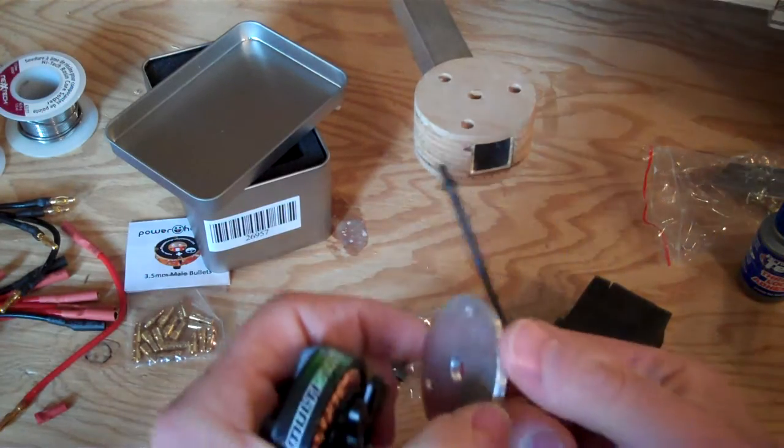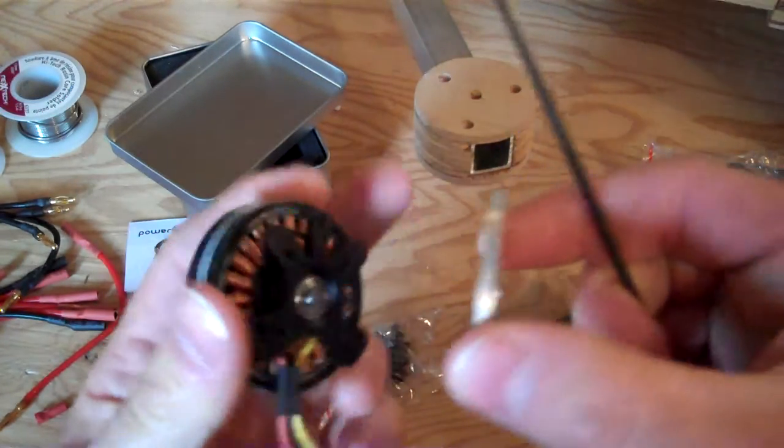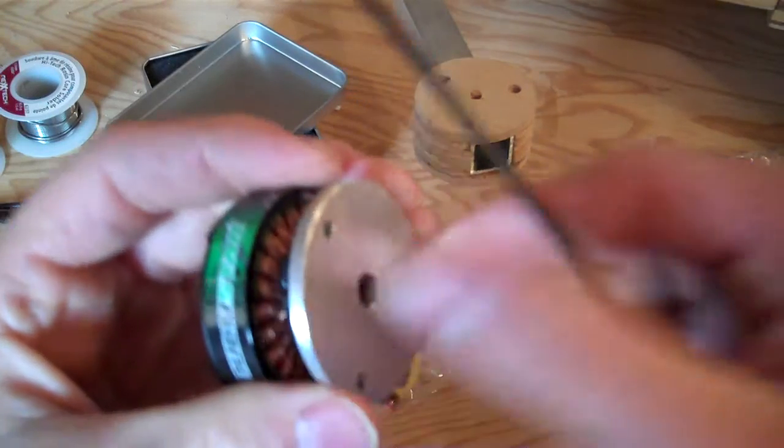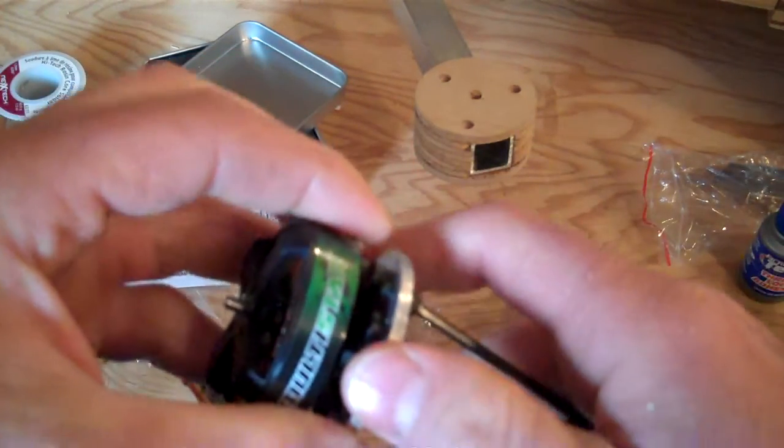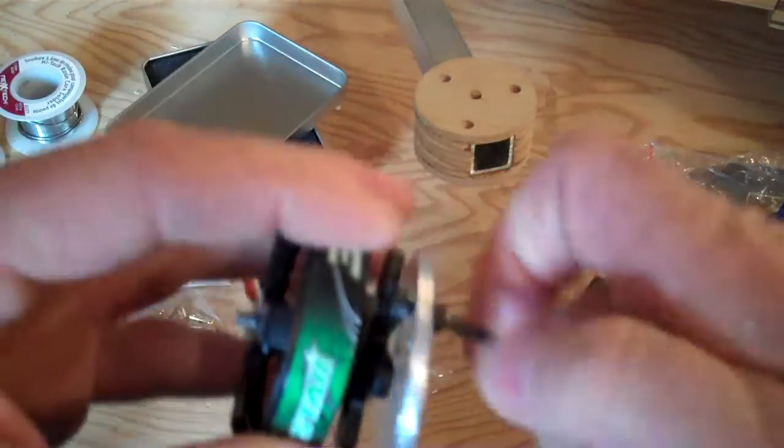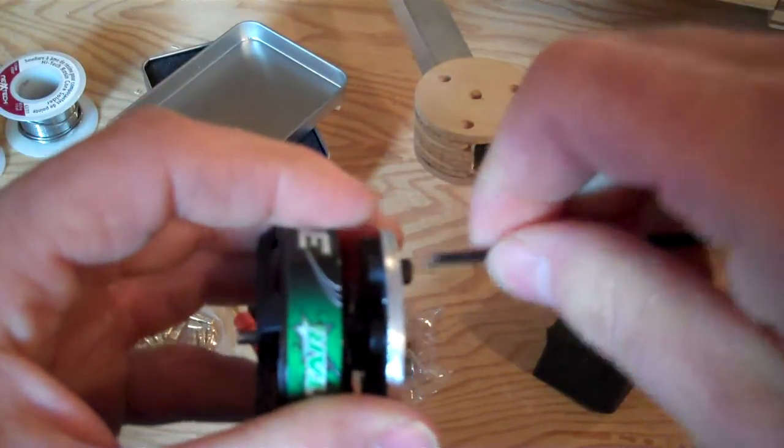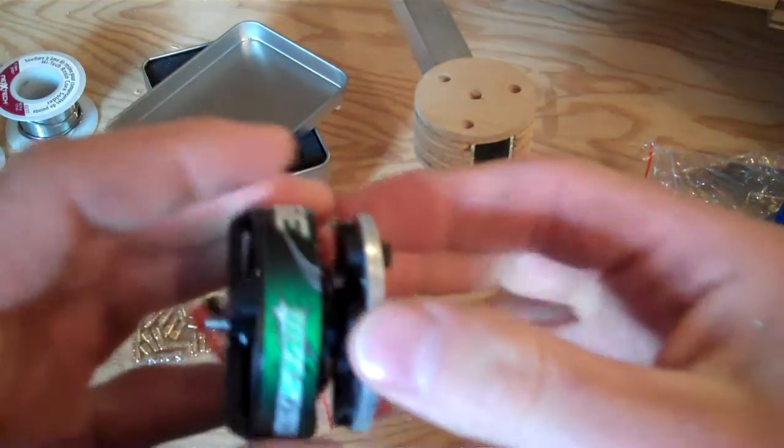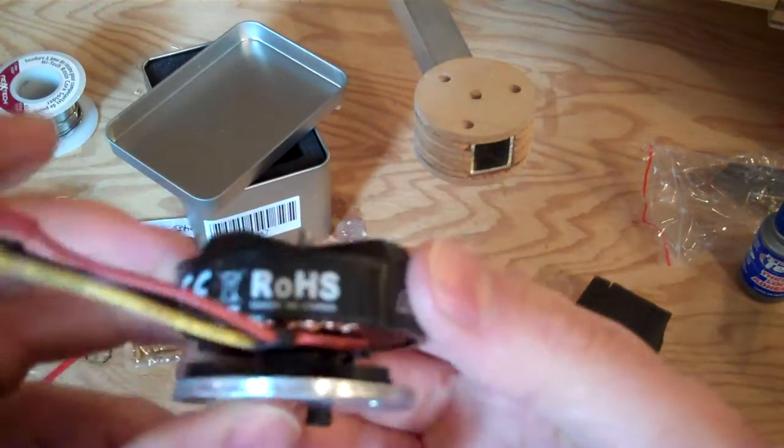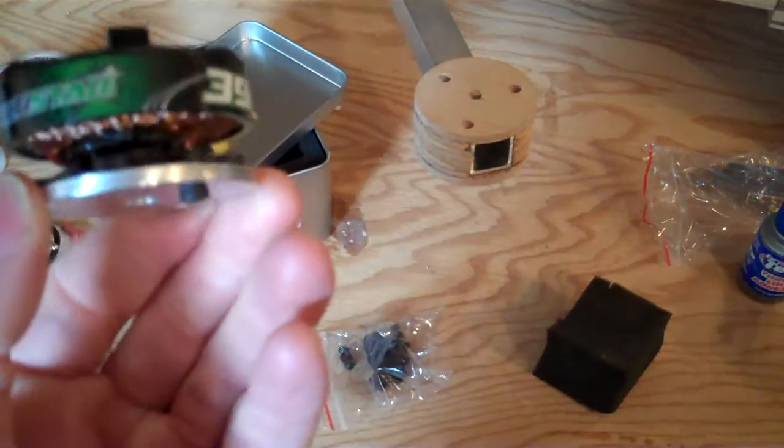The way this works: take your motor, pop the screw through. Don't forget to use thread lock - always use thread lock when screwing metal to metal. That's how that works.